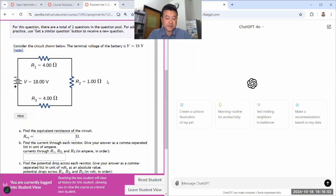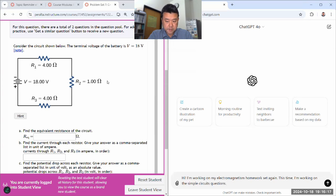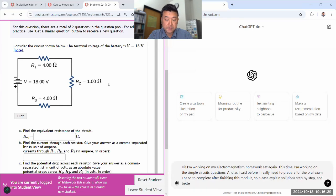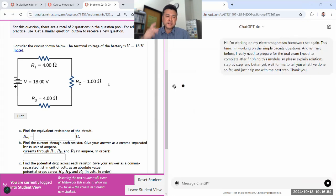Okay, so let me start with that. Hi. I'm working on my electromagnetism homework set again. This time, I'm working on the simple circuit questions. And as I said before, I really need to prepare for the oral exam I need to complete after finishing this module. So please explain solutions step by step. And better yet, wait for me to tell you what I've done so far and just help me with the next step. Thank you. And it'll acknowledge.